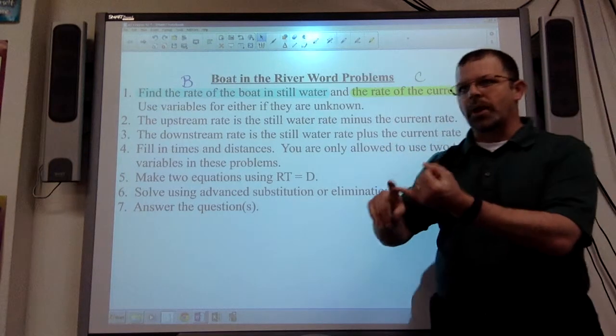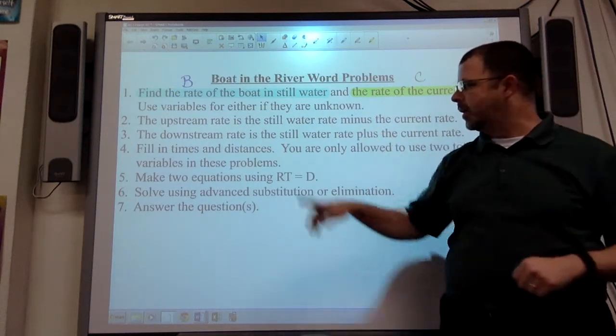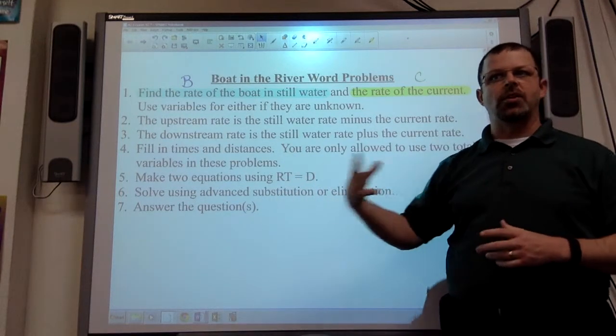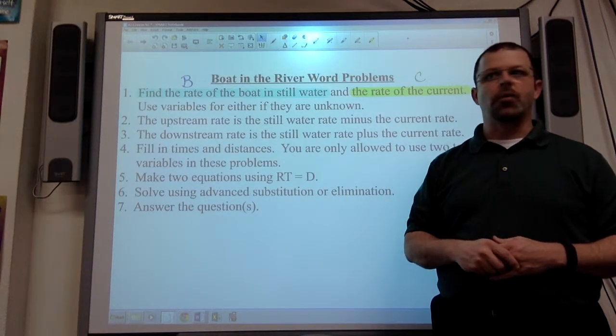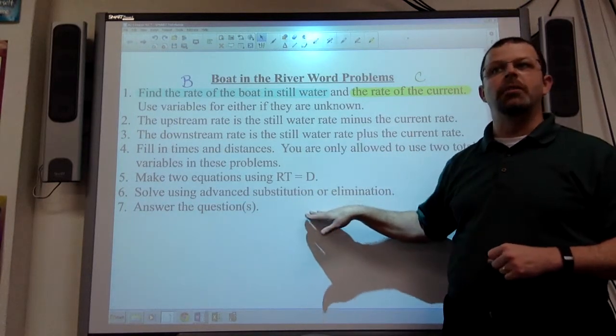Once you've filled in the rates, the times, and the distances, so both the charts or both rows filled out completely, rate times time equals distance like always, it creates an equation, a system of equations with two variables, advanced substitution, which is what we've done before.